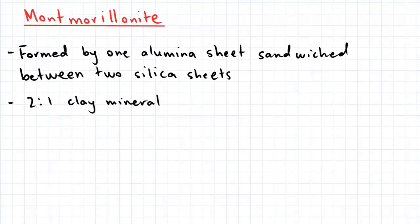The next mineral is montmorillonite, which is formed by one alumina sheet being sandwiched between two silica sheets. This is known as a two-to-one clay mineral, and this is what the mineral looks like in a diagram.